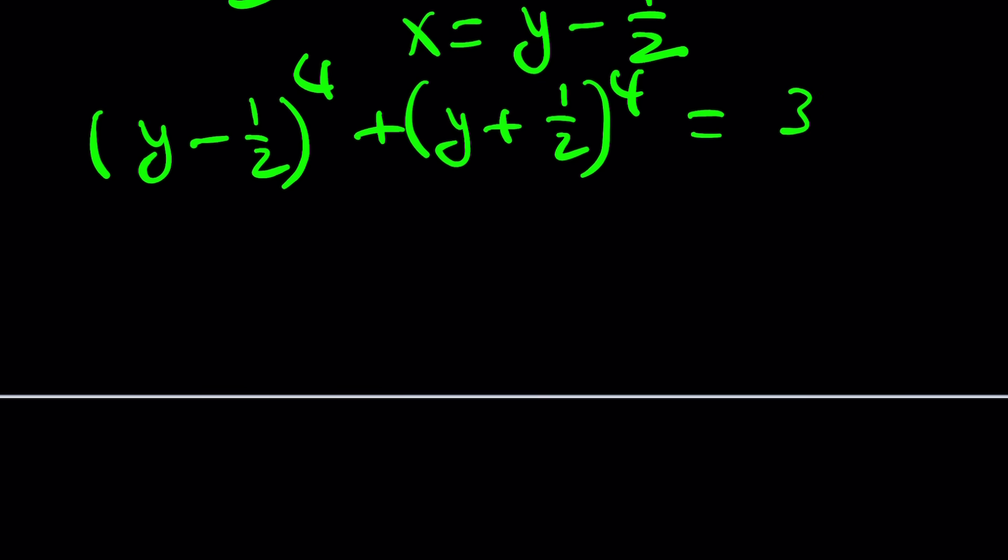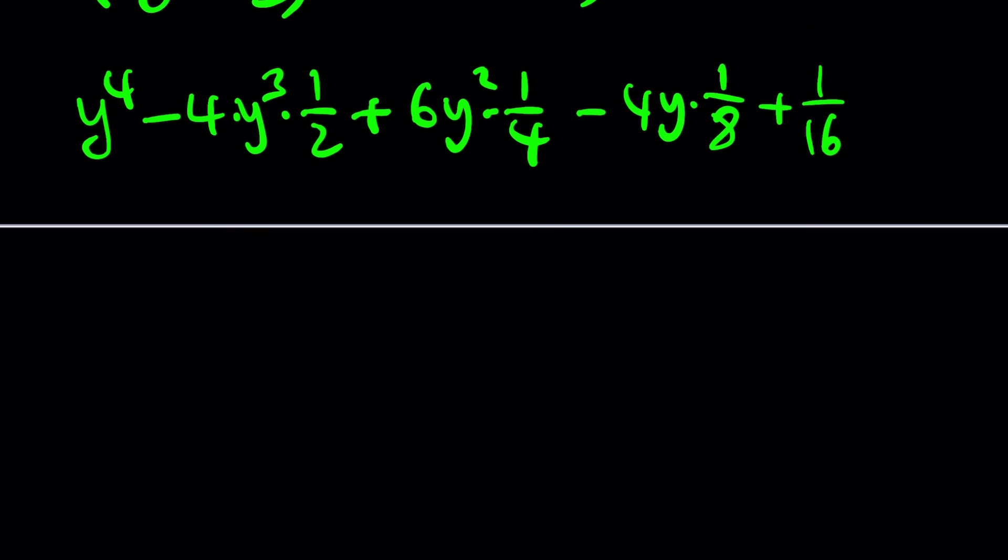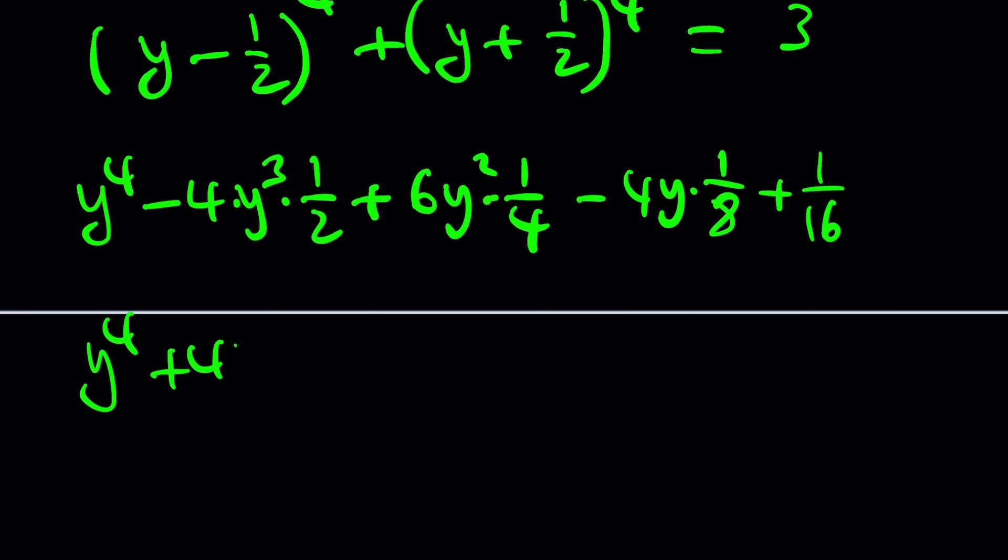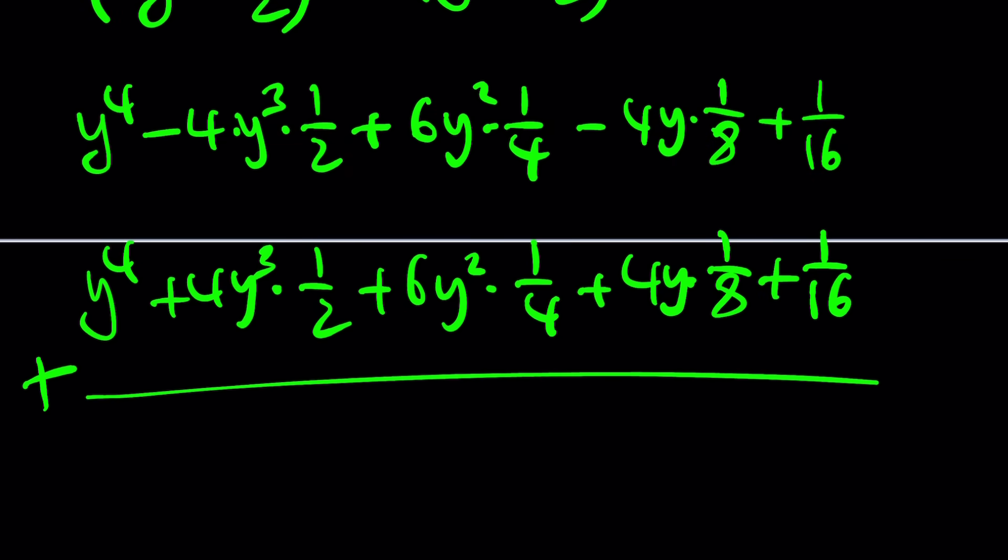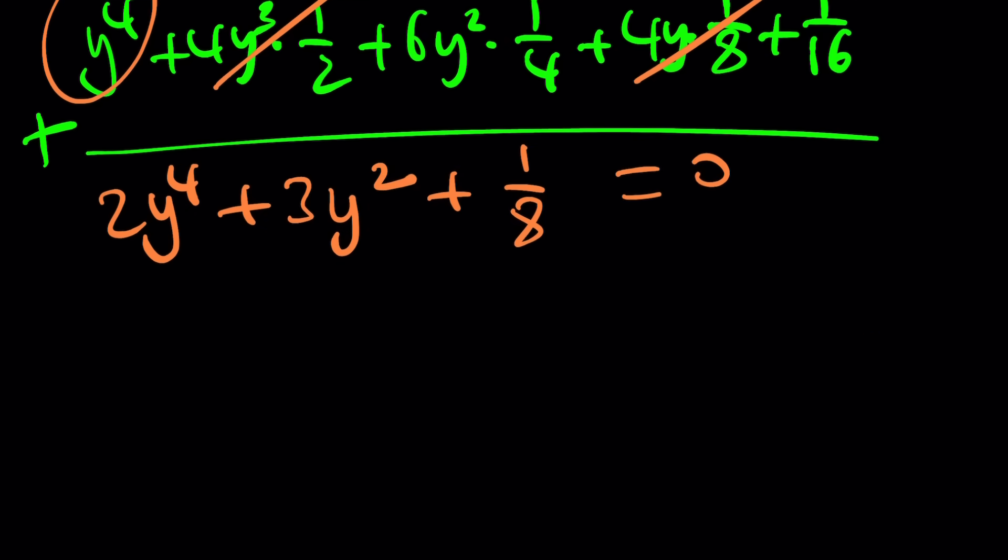If you expand it now, things are going to be real cool. You're going to get y to the fourth, minus four times y cubed times one half, plus six y squared one fourth, minus four y one eighth, and then plus one over 16. This is the alternating one, and then the next one is going to be with all plus signs. A lot of terms are going to cancel out. These terms cancel. What I get is two y to the fourth plus three y squared plus one eighth equals zero. This is a biquadratic. Beautiful.